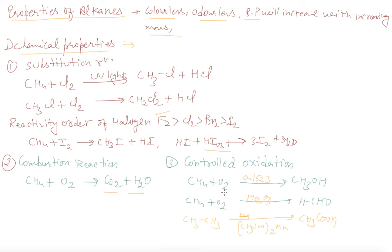And controlled oxidation. When we will give the oxygen in controlled amount, in the presence of copper with 523 Kelvin temperature, we are getting methanol. Methane with oxidation, molybdenum oxide, we are getting formaldehyde. And ethane, in the presence of molybdenum acetate, we are getting acetic acid.